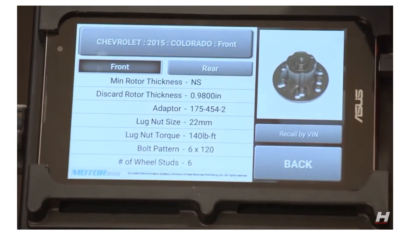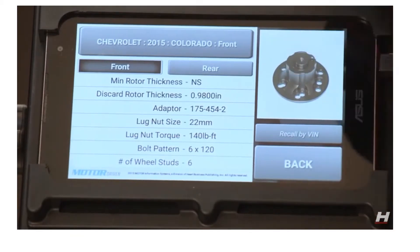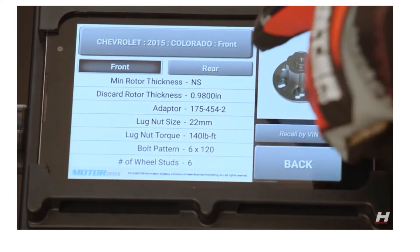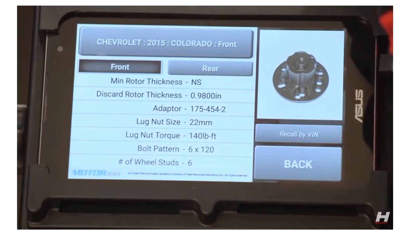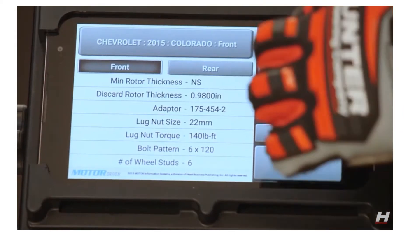Now that I've selected the vehicle I will have a lot of information displayed. The discard rotor thickness, that's a key piece that I'll need to check my rotor thickness before I go any further. The adapter as well as lug nut torque. Lug nut torque is 140 foot-pounds. I'm going to remember that for later.